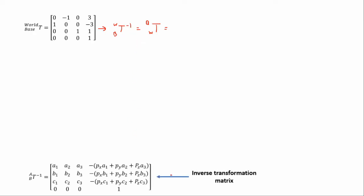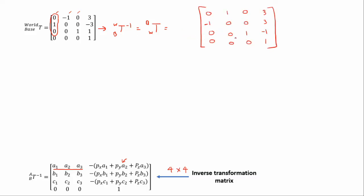Or you can simply use this method which is only applicable for a 4 by 4 matrix. Here, the columns have been transposed into rows and this is done for the first three columns. The final column is calculated using these three equations. If you found the inverse transformation matrix, you should have it equal to this.